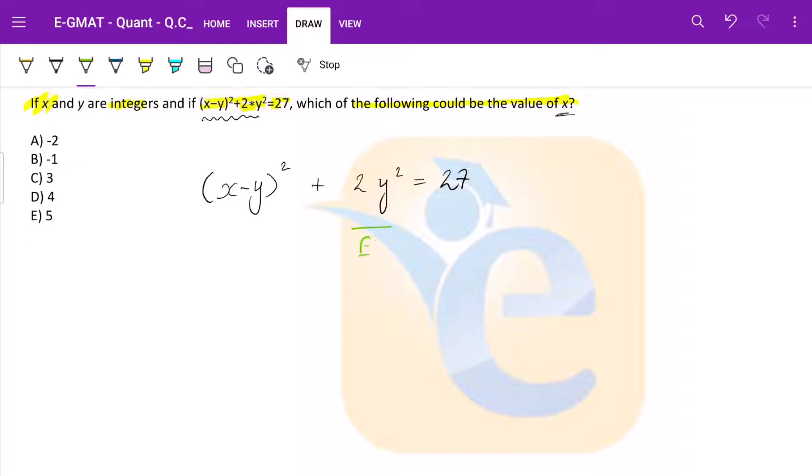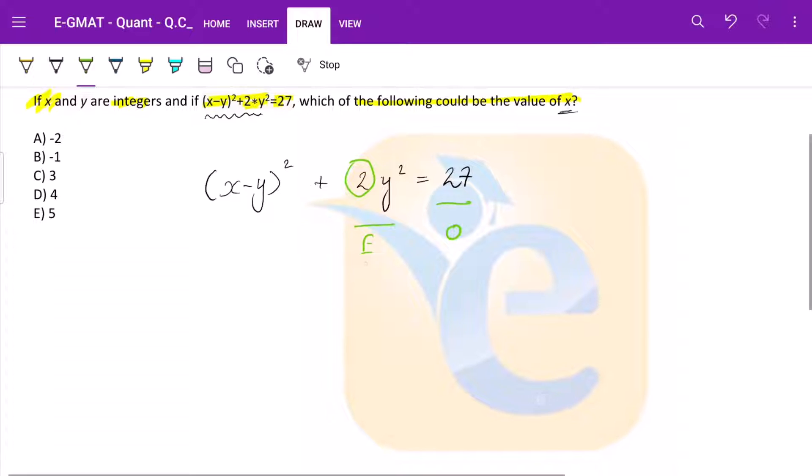This is an even number because it is multiplied by 2. Then this is an odd number. So the sum of even plus an odd number can only be odd. So this has to be odd. This was our first set of inferences.